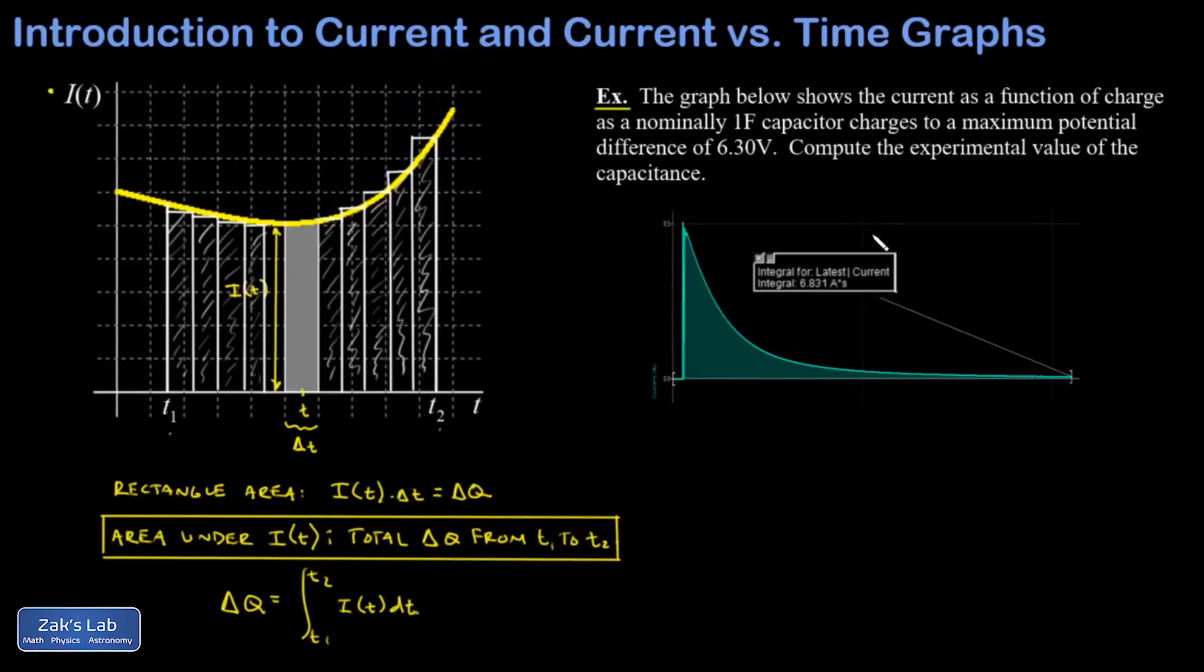All right, so let's take a look at the output of our experiment. I have a graph of I of T, and I have the integral computed numerically in the software. It says the integral comes out to 6.831 amp seconds. Well, what's an amp second? An amp is a coulomb per second. If I multiply both sides by seconds, I find that an amp second is a coulomb. So this is just a funny way of saying coulombs. 6.831 coulombs of total charge flow given by the area under the graph of I of T.